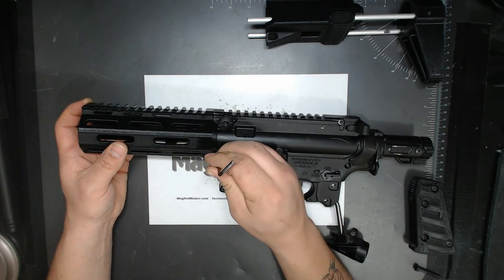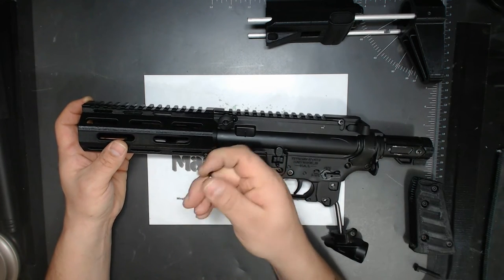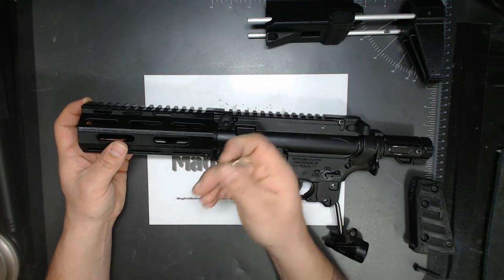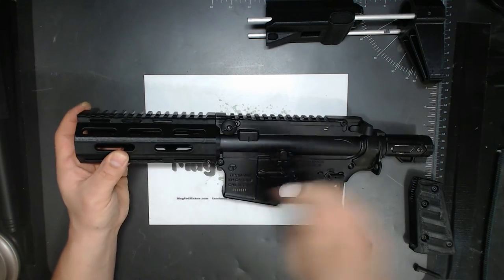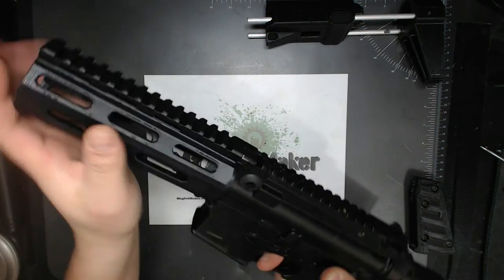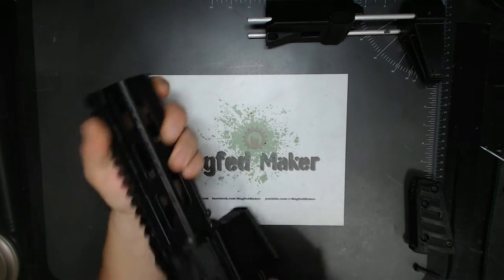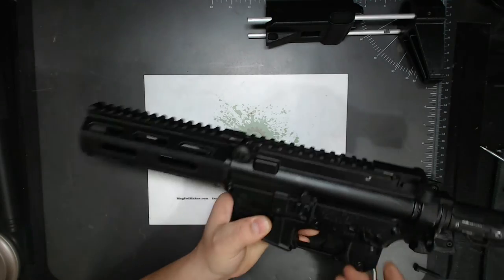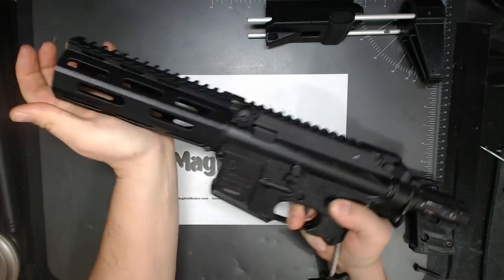You can use the included Tippmann Allen keys, or a standard 3mm Allen key. Seems to work just fine. And then nice, that's nice and solid in there. No wiggle. And it'll take a fall.